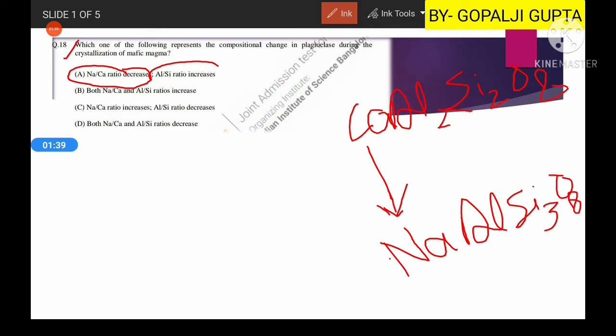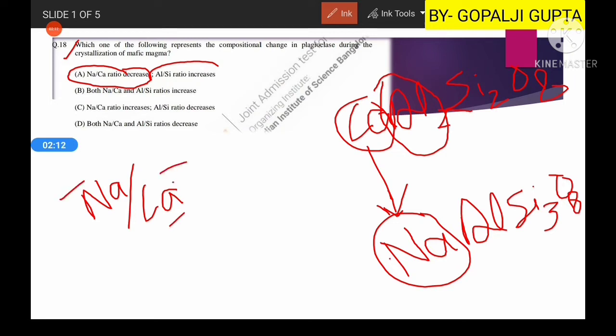Let us see the Na to Ca ratio. With the progress of crystallization, the calcium is continuously used. Whatever calcium is there in the magma will be depleted, while the proportion of sodium will increase. So definitely if there is decrease in calcium and increase in sodium, the ratio will increase.